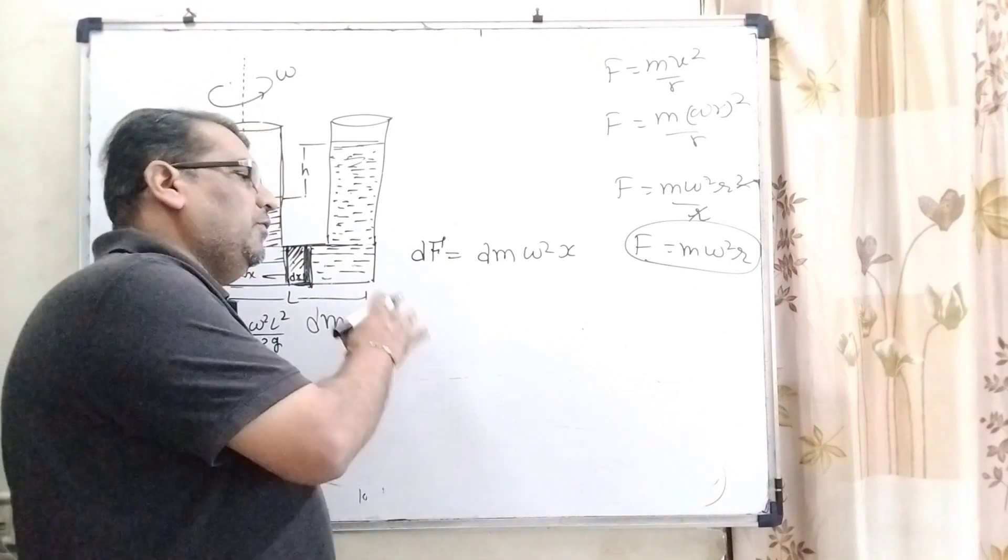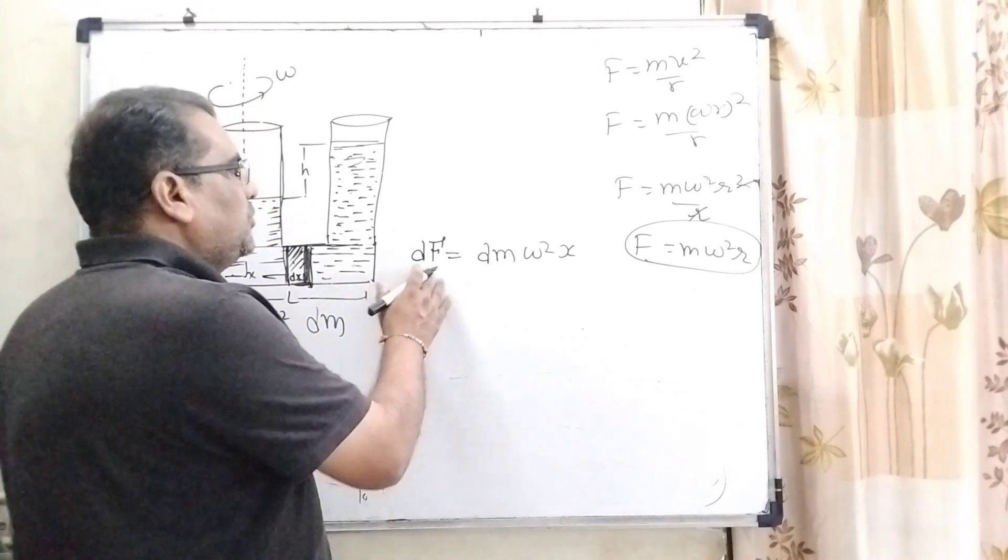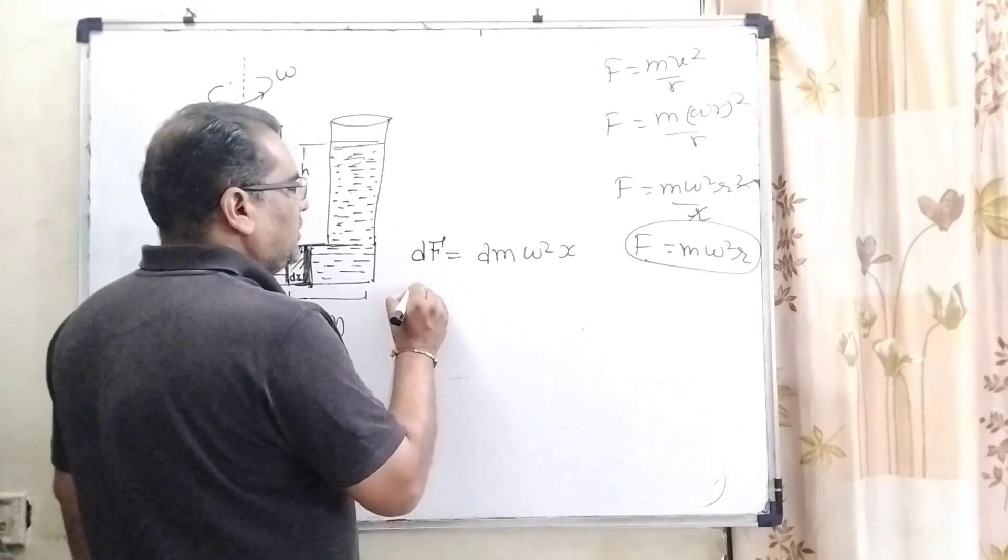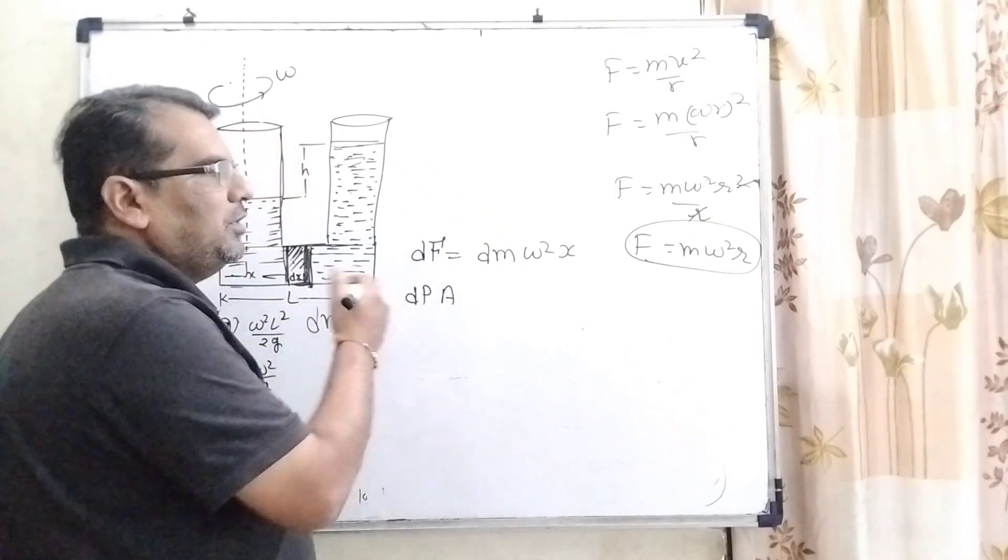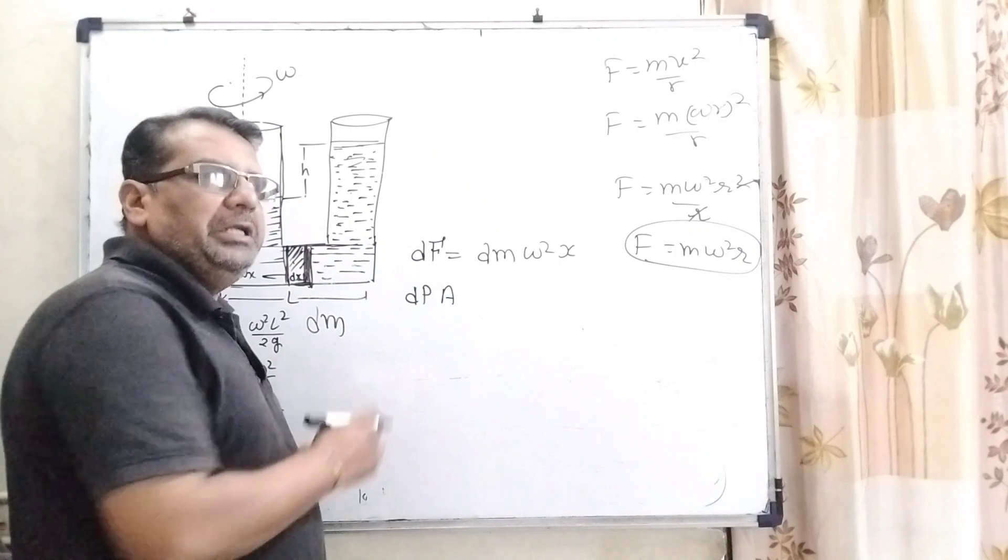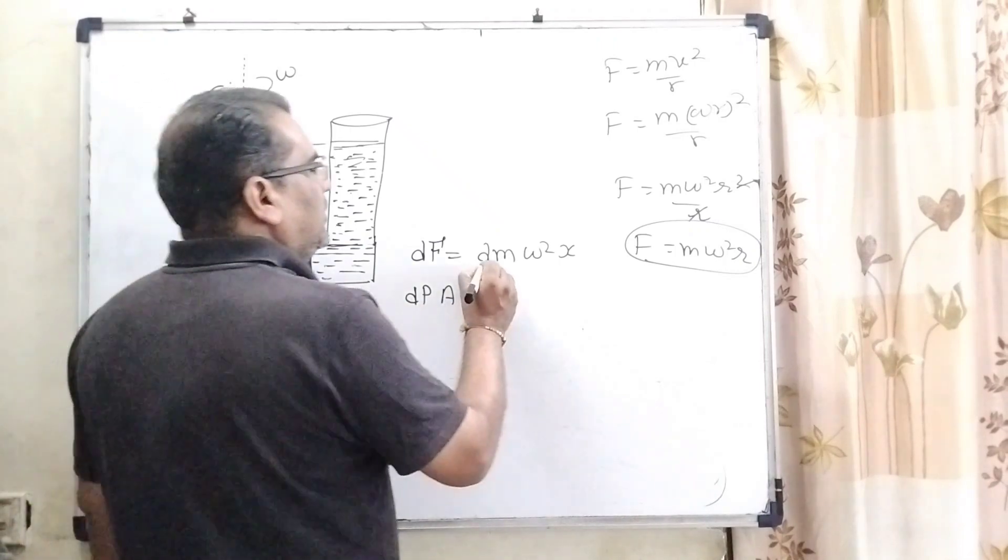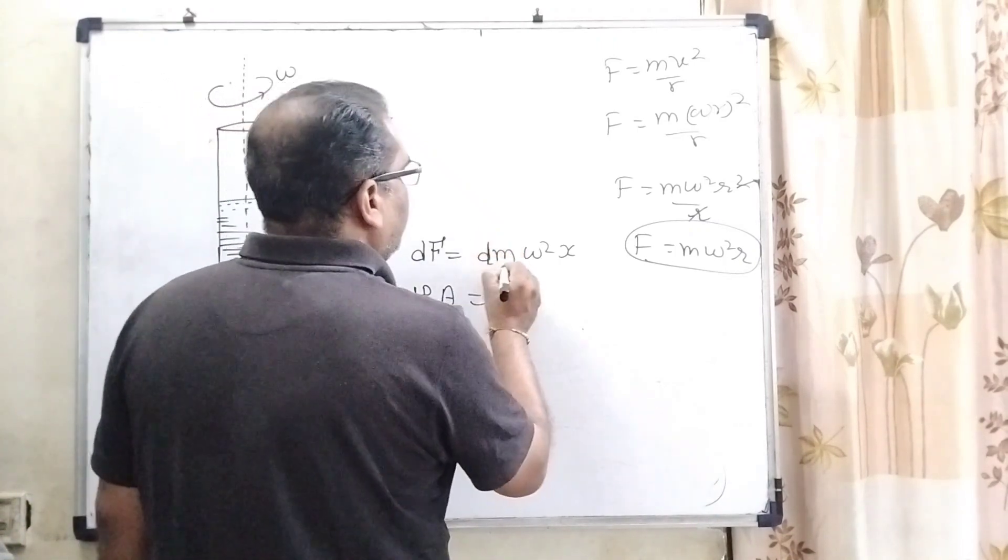And what is the relation between force and pressure? Pressure - force equals pressure into area. For the mass element, we have written dP and dm. dm means mass element, then density rho, cross-section area is A, and dx is the width of this mass element.